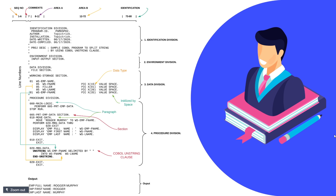The first section is the IDENTIFICATION DIVISION, which is a documentation section — the program name is mandatory. The second section is the ENVIRONMENT DIVISION for environment-related details, kept blank here. The third section is the DATA DIVISION; since no files are used, it is also kept blank. In the WORKING-STORAGE SECTION, two variables are defined: a group variable containing first name and last name, and an elementary variable WS-EMP-F-NAME for the full name, defined as alphanumeric X(35). Both variables are initialized with spaces.